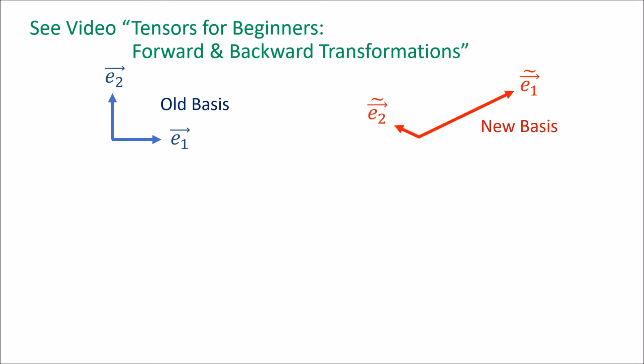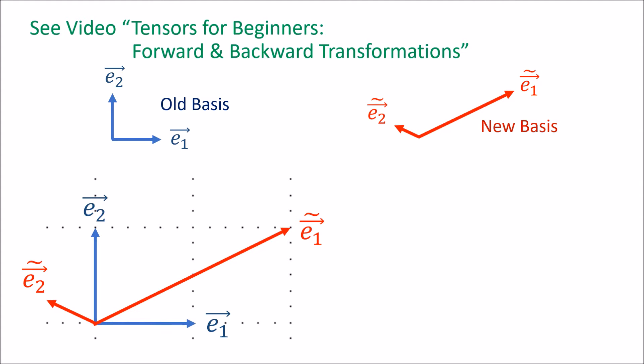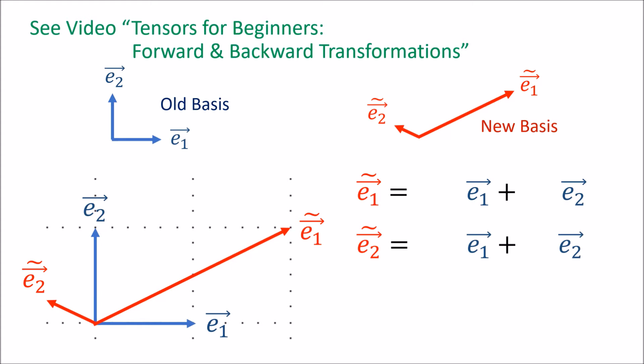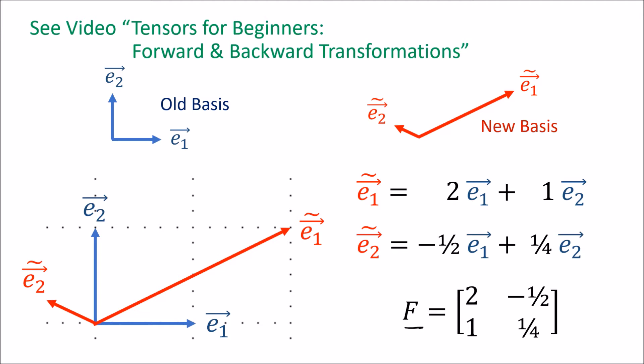In that original video I showed how we can take two sets of basis vectors and convert between them. In one direction we can build the new basis vectors using the old basis vectors by figuring out these scaling coefficients. And these scaling coefficients, when taken together in a matrix, we call the forward transform F.